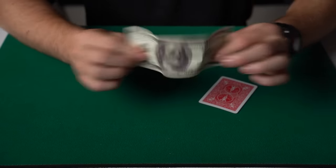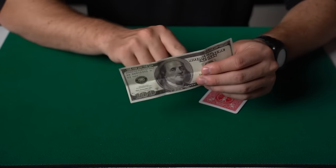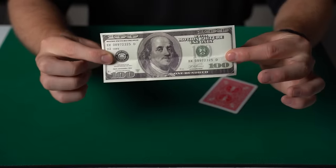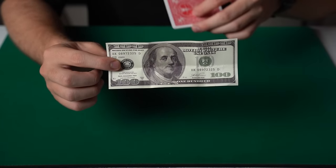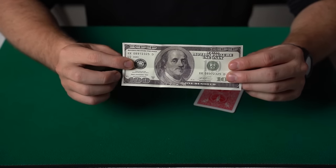And then this can be handed out to be inspected. Everyone always thinks that there's something wrong with the bill, like there's a slit or something in it. So you can give this out to be inspected. They look at it, at which point you can put the card in your pocket or switch it out for another one. You've got all the misdirection in the world to do that.